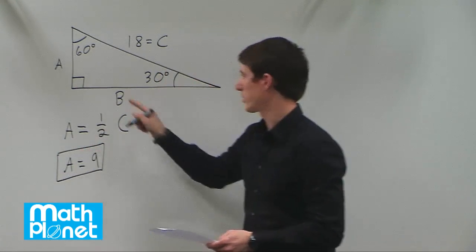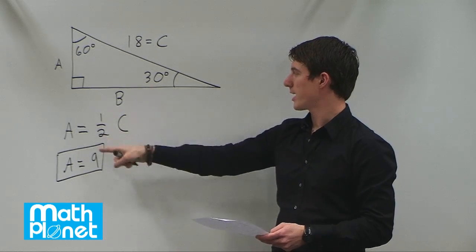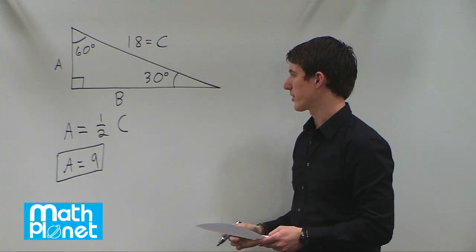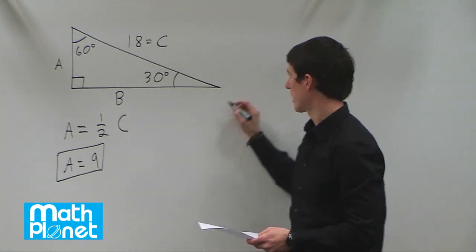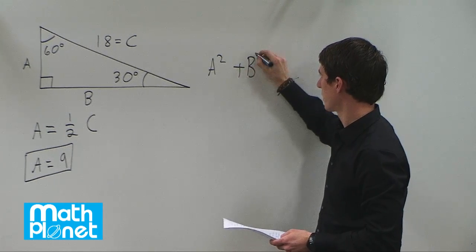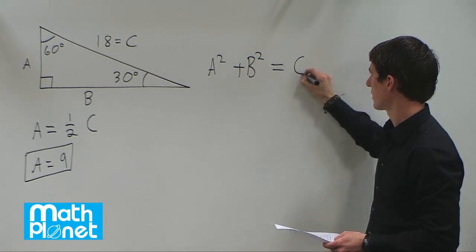Now we need to find what side B is. We have A is 9, C is 18, and to find B we can use the trusty Pythagorean theorem. So the Pythagorean theorem says A squared plus B squared equals C squared.